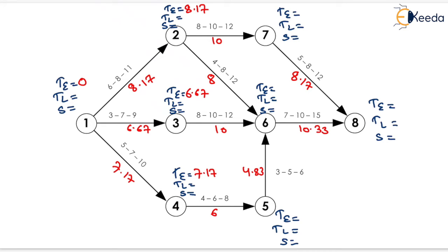For event 5 it will be equals to 7.17 plus 6, which equals 13.17. Similarly for event 6 it will be equals to 8.17 plus 8, that is 16.17; also 6.67 plus 10 that is 16.67; and 13.17 plus 4.83 which equals 18. The maximum value is 18, so that is the TE for event 6. For event 7 it will be equals to 8.17 plus 10, that is 18.17. For event 8 it will be equals to 18 plus 10.33, that is 28.33; also 18.17 plus 8.17 equals 24.34 — so the maximum value 28.33 is the TE for event 8.